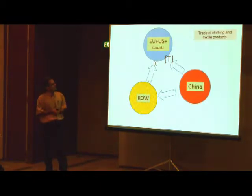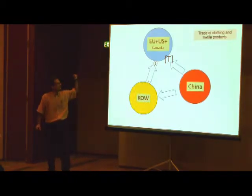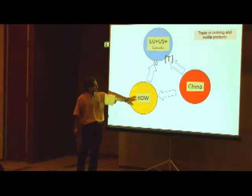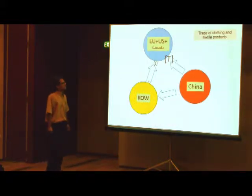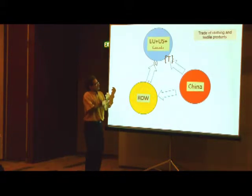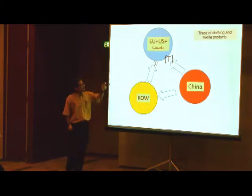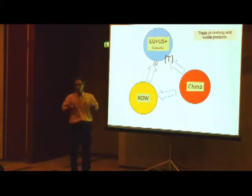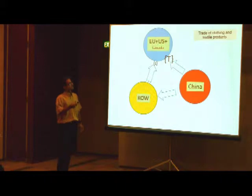So what's the setting here? We have the US and Canada importing clothing and textile items from different countries — from the rest of the world as well as from China. And until 2005, there were big restrictions on those importations. These were import quotas. The restrictions on China were way larger than the restrictions on imports coming from the rest of the world.